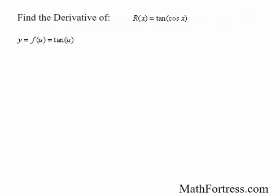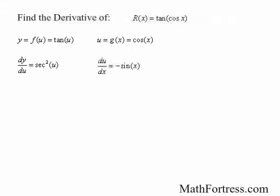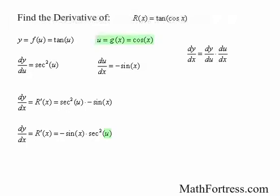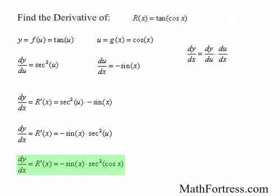Using Leibniz notation, we let y equal tangent of u, so dy over du equals secant squared of u. We let u equal cosine of x, so du over dx equals negative sine of x. That means dy over dx equals secant squared of u times negative sine of x, which simplifies to negative sine of x times secant squared of u. Substituting u with g of x, the final expression is negative sine of x times secant squared of cosine of x.